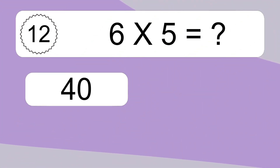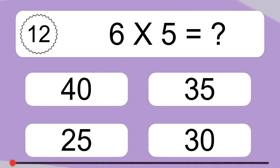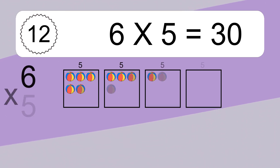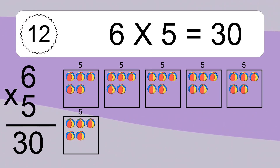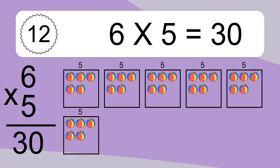6 times 5 equals what? 6 times 5 equals 30. We have 6 boxes, and each box has 5 colorful balls inside. If you count all the balls in all the boxes together, you will have 6 times 5 balls. This equals 30 balls.